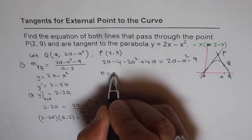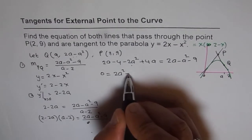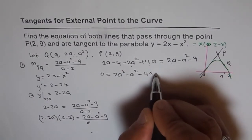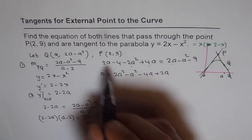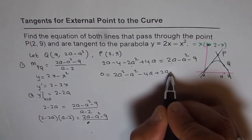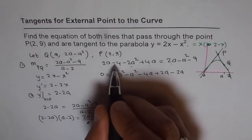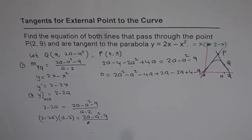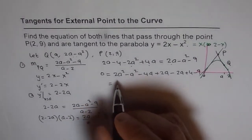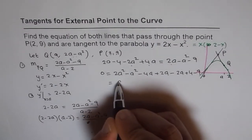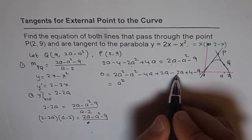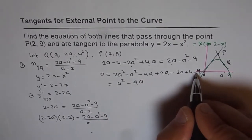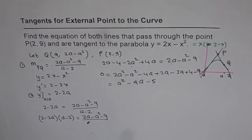Bringing all terms to one side, we get 0 = a squared minus 4a minus 5. Combining: 2a minus a squared gives a squared on the right; minus 4a plus 2a minus 2a gives minus 4a; and the constants 4 minus 9 give minus 5. So the quadratic equation to solve is a squared minus 4a minus 5 = 0.